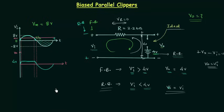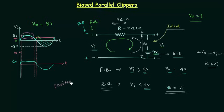I hope it's clear how to obtain the output waveform for the biased parallel clipper circuit. The next thing is to determine whether this clipper is a positive or negative clipper. You can see we have clipped the positive portion of the waveform, so this clipper is a positive clipper.